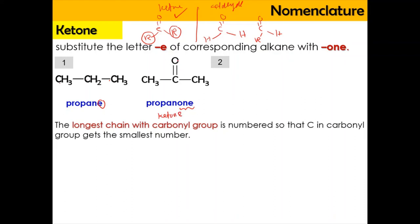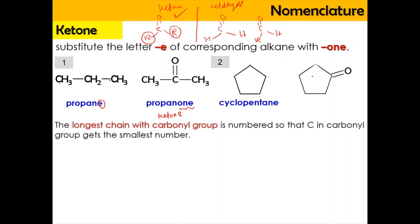Propanone always has the carbonyl in the middle — it cannot be at the side. Similarly, cyclopentane with 1, 2, 3, 4, 5 carbons, when it becomes a ketone, becomes cyclopentanone. The E is changed into ONE.